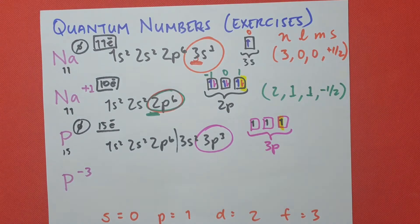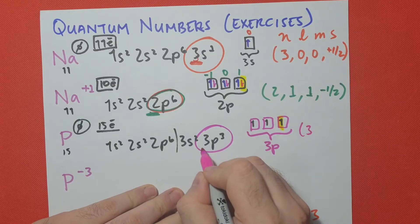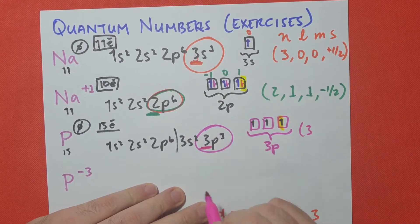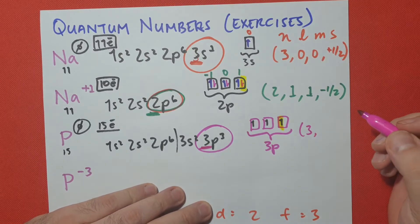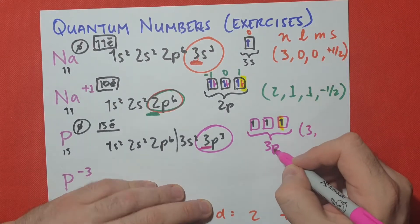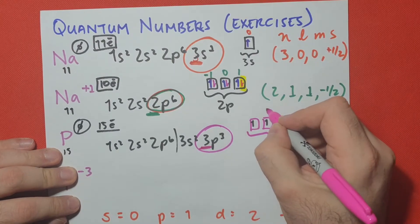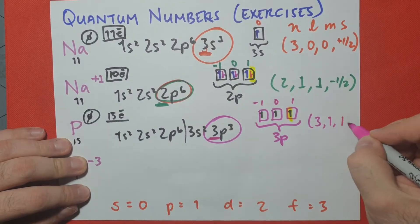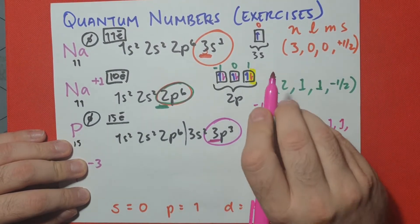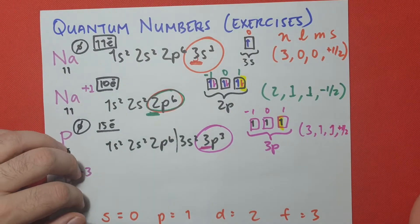The last electron we filled is this one. So what are our quantum numbers? Our quantum numbers are going to be 3 for the main number, because that's the highest level of the last orbital that we filled. Then we have, for the azimuthal, the shape is p. p is 1. For the boxes, remember 0 is the middle. 1 is this one, and negative 1 is the other one. The last one we filled is this one, so it's a 1. And last but not least, up spin, so plus 1 half.